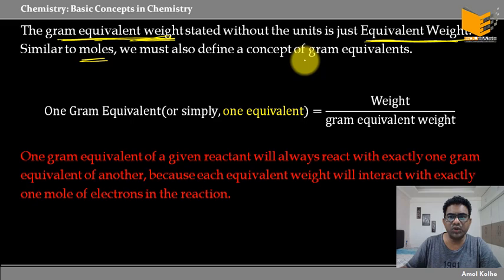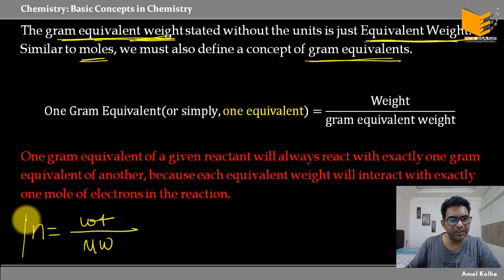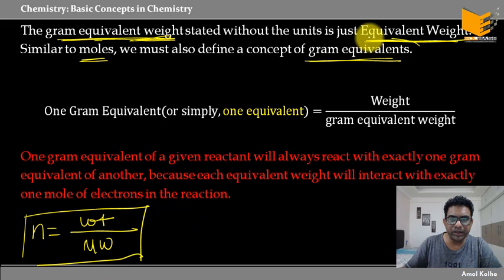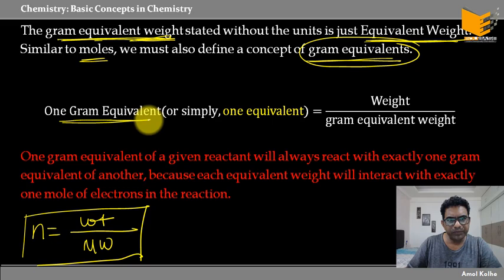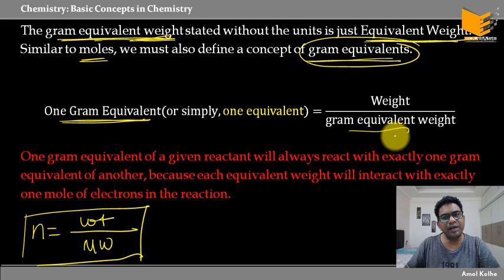Moles को हमने कैसे define किया था — moles = weight divided by molecular weight. तो अगर gram equivalent weight को define करना है, तो one gram equivalent = weight divided by gram equivalent weight. Number of equivalents is equal to weight divided by gram equivalent weight — यह उसी तरह है जैसे number of moles is equal to weight by molecular weight।